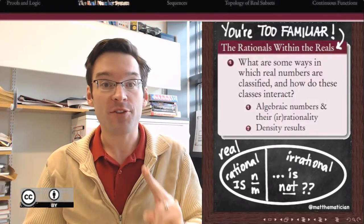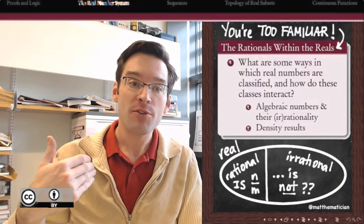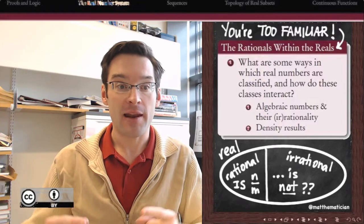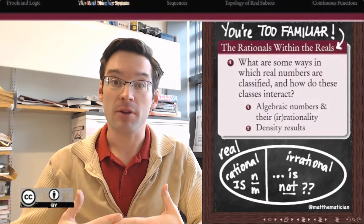Today we're going to take two small steps away from the rational shore. First, we'll meet a class of mostly irrational numbers called the algebraic numbers. Then we'll investigate how close together the rational and irrational numbers are on the real number line.